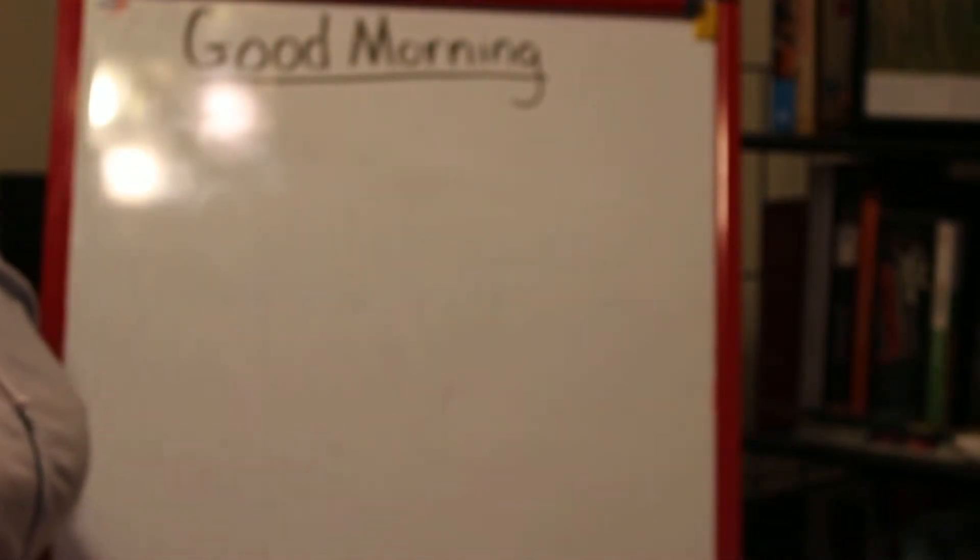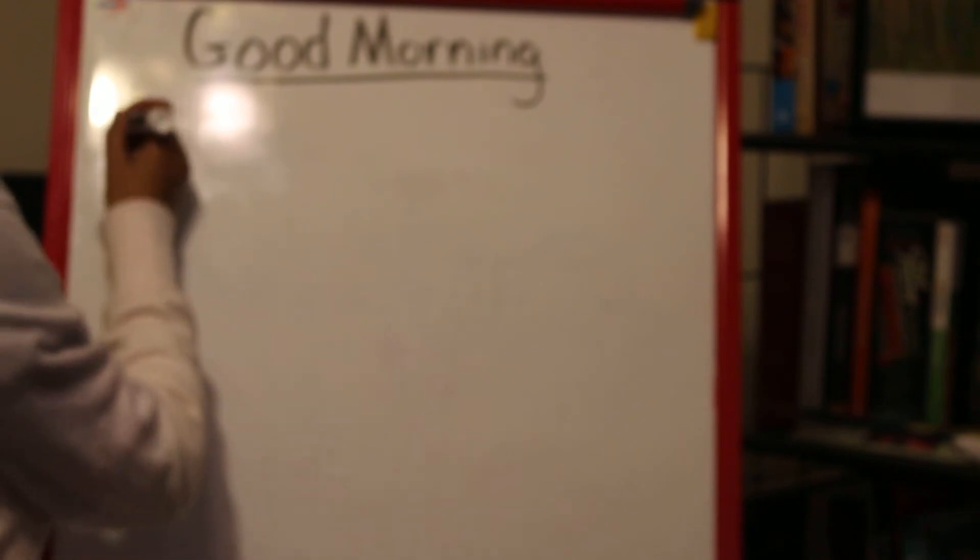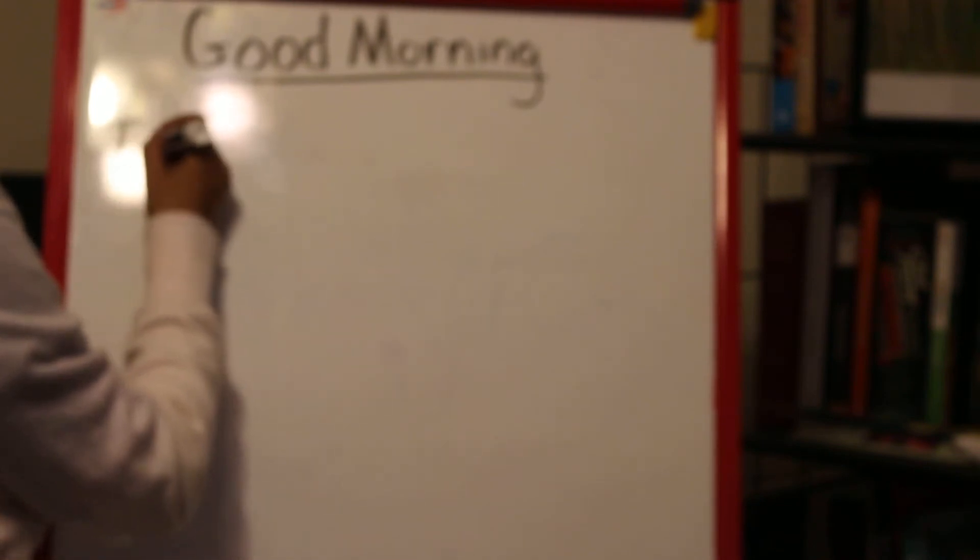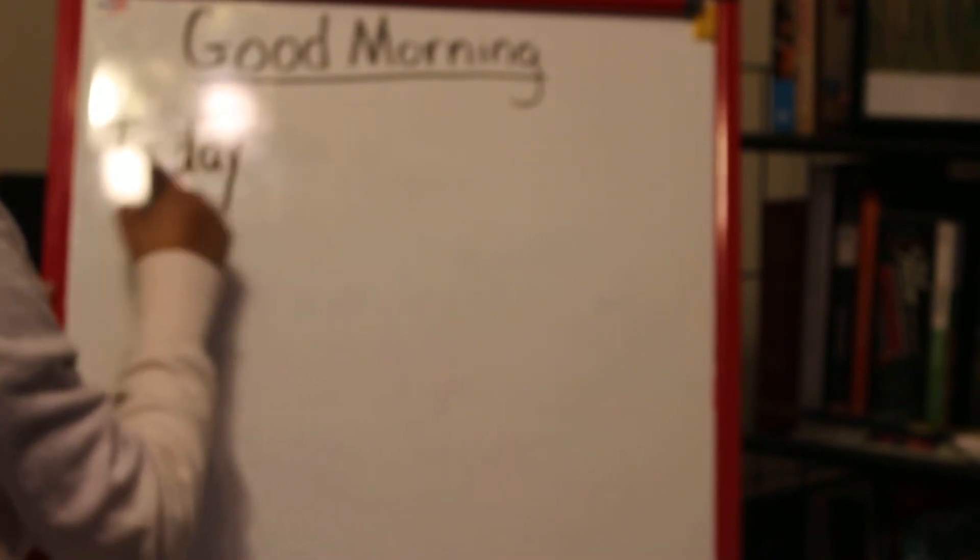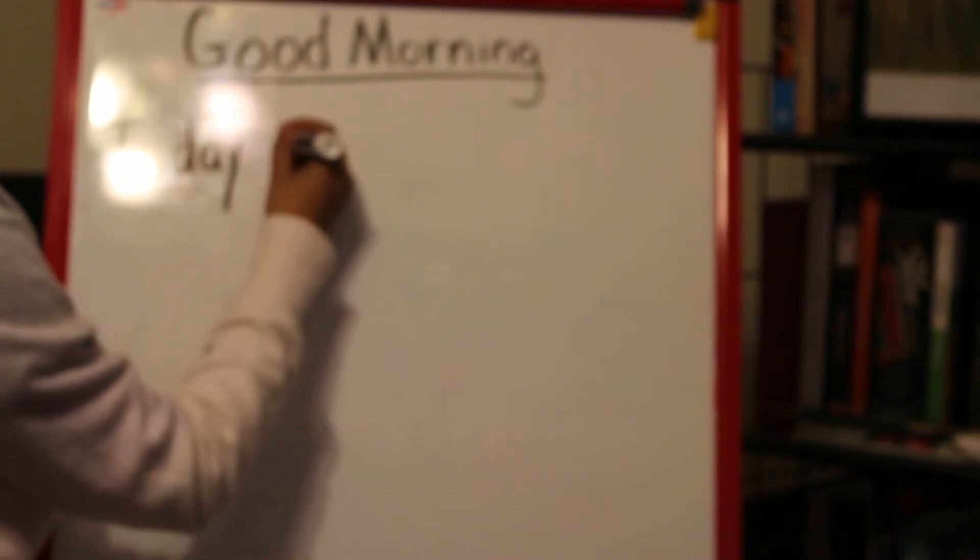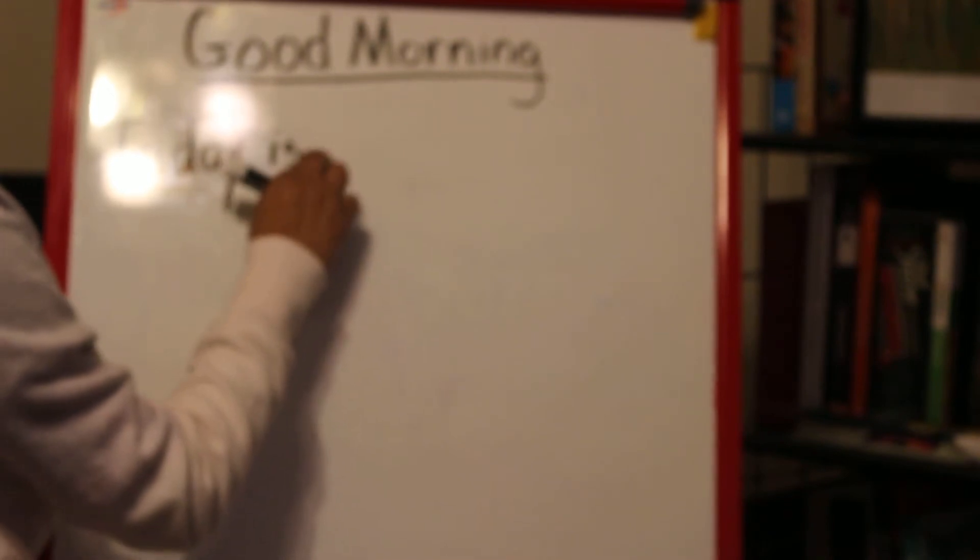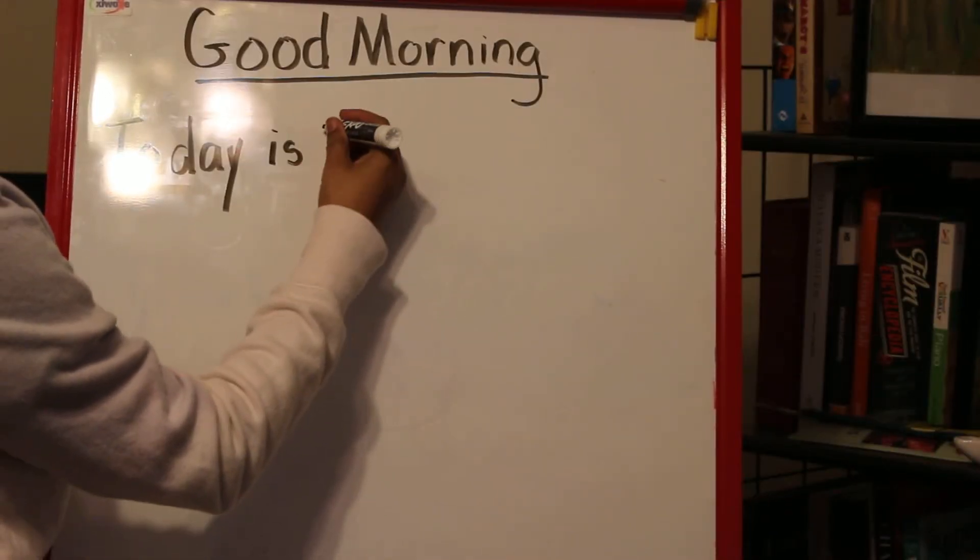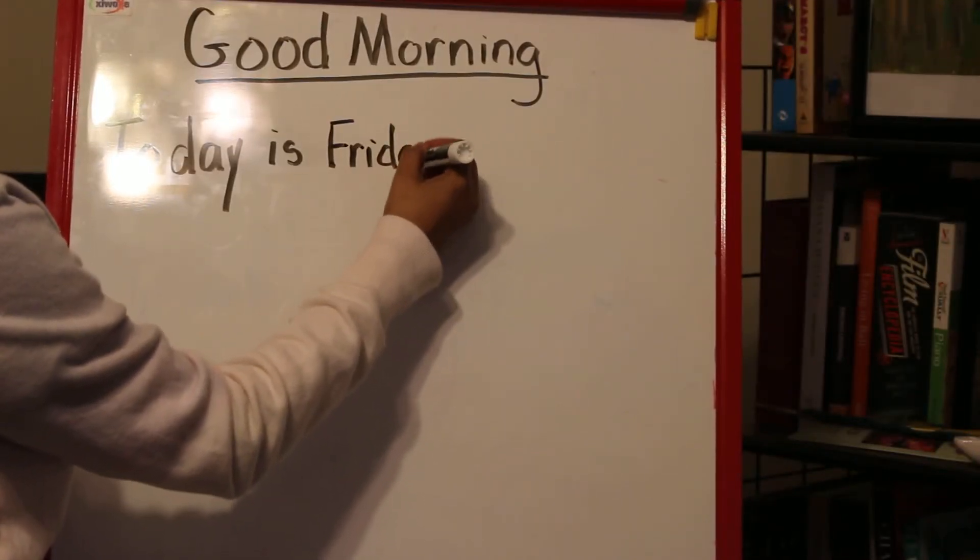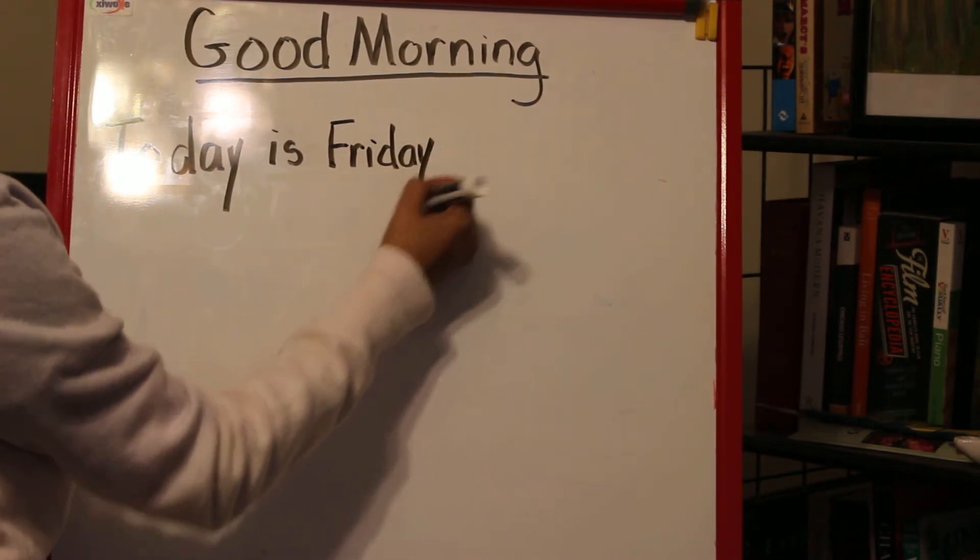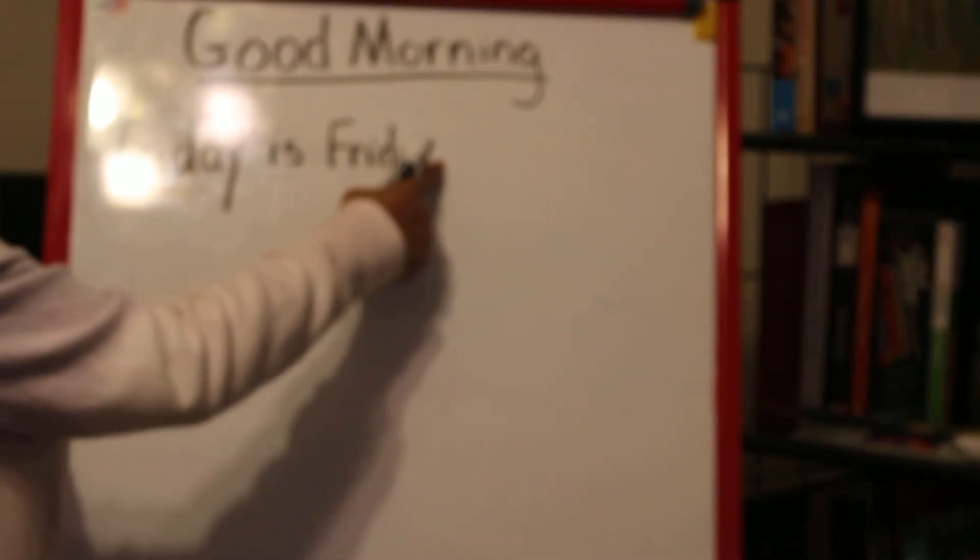Every sentence starts with what? A capital letter. So here we go. Today - two-finger space - is - two-finger space - Friday. And what punctuation mark do we put here? You're right, a period. Let's read that. Today is Friday.